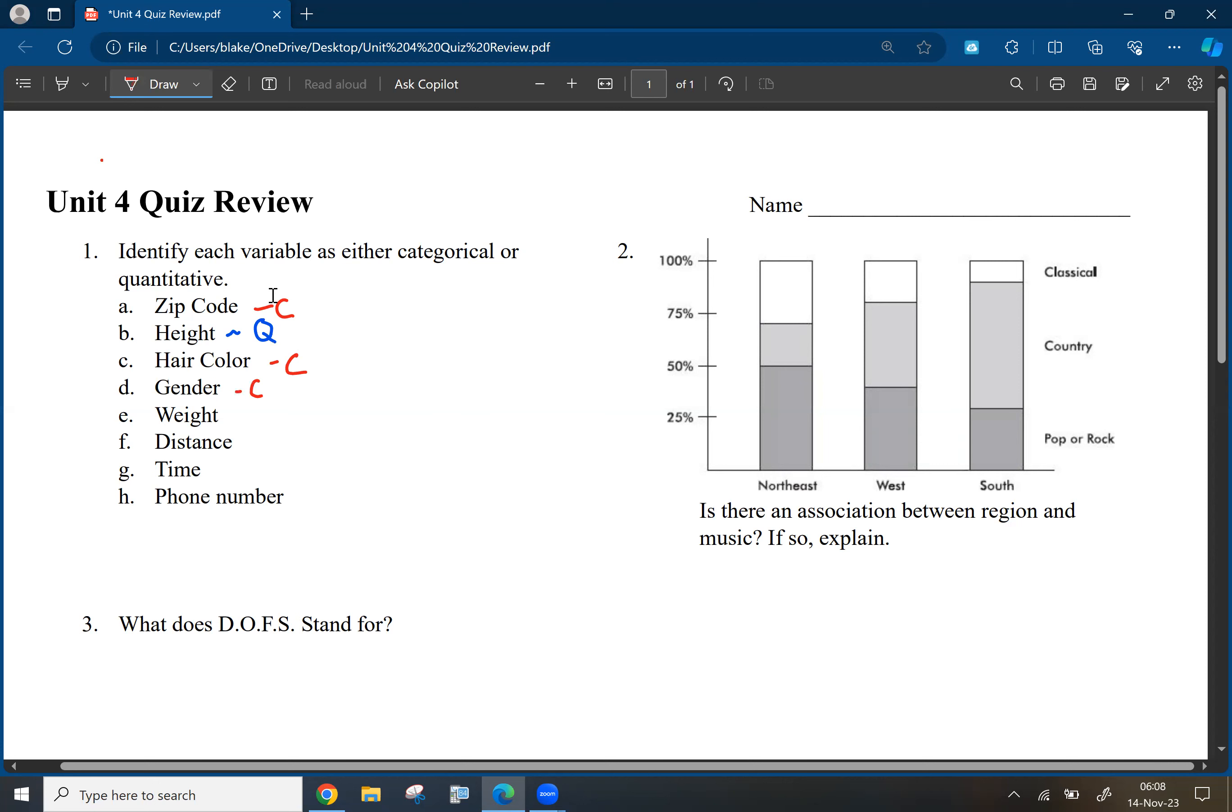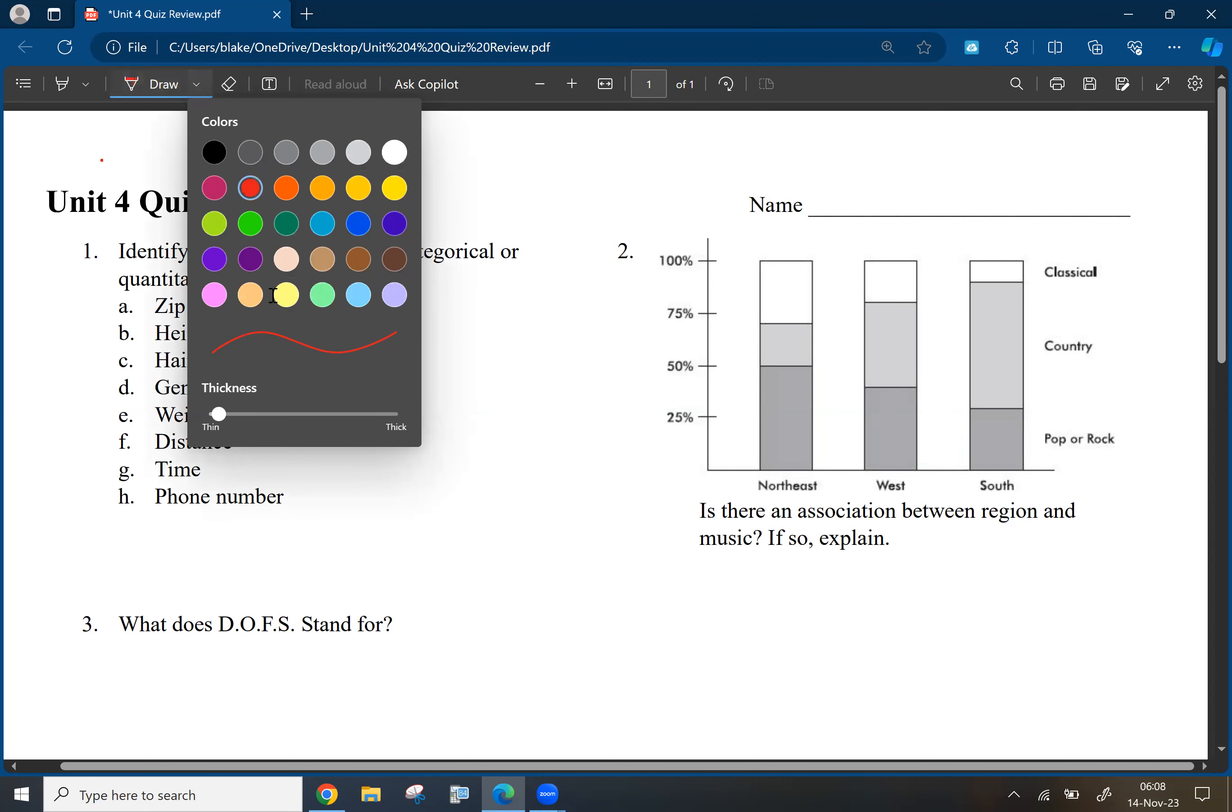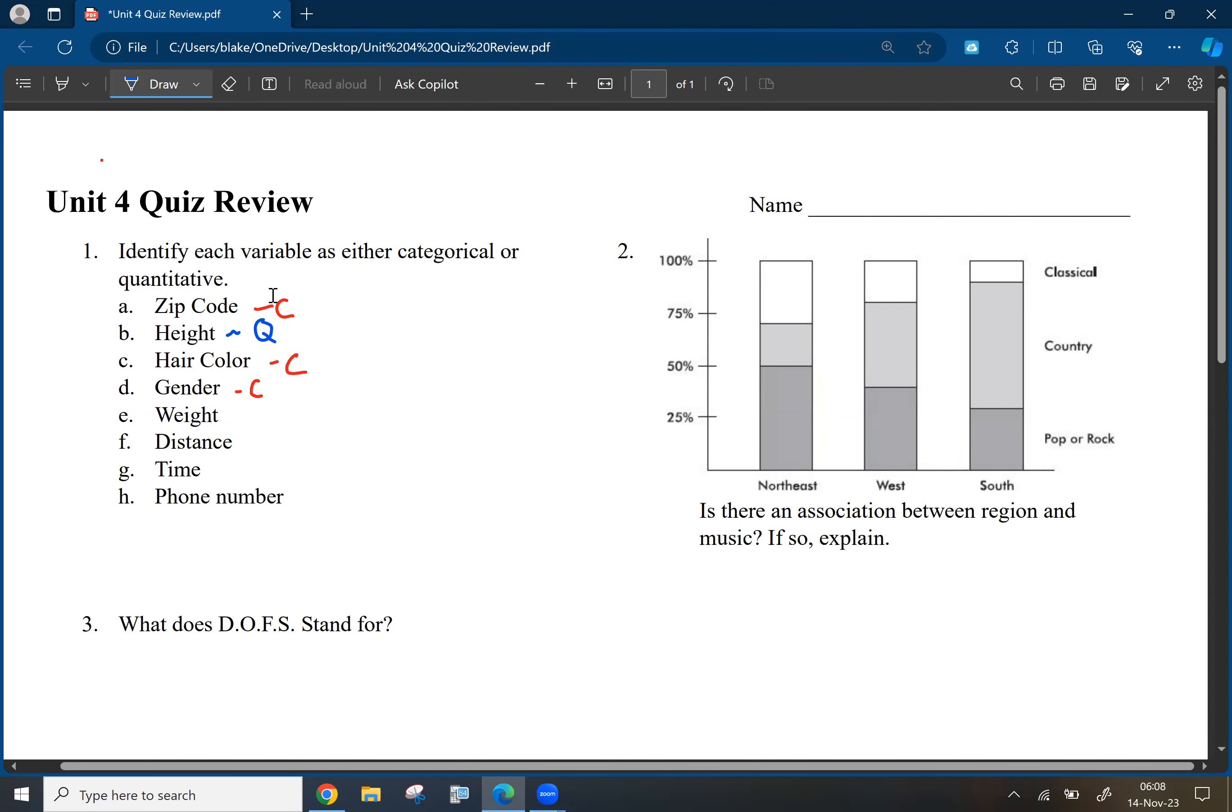Weight. Weight is quantitative because you can measure weight. Distance is also quantitative. You can measure distance, right? Numerical time is quantitative. You can measure time. It's a quantitative value.